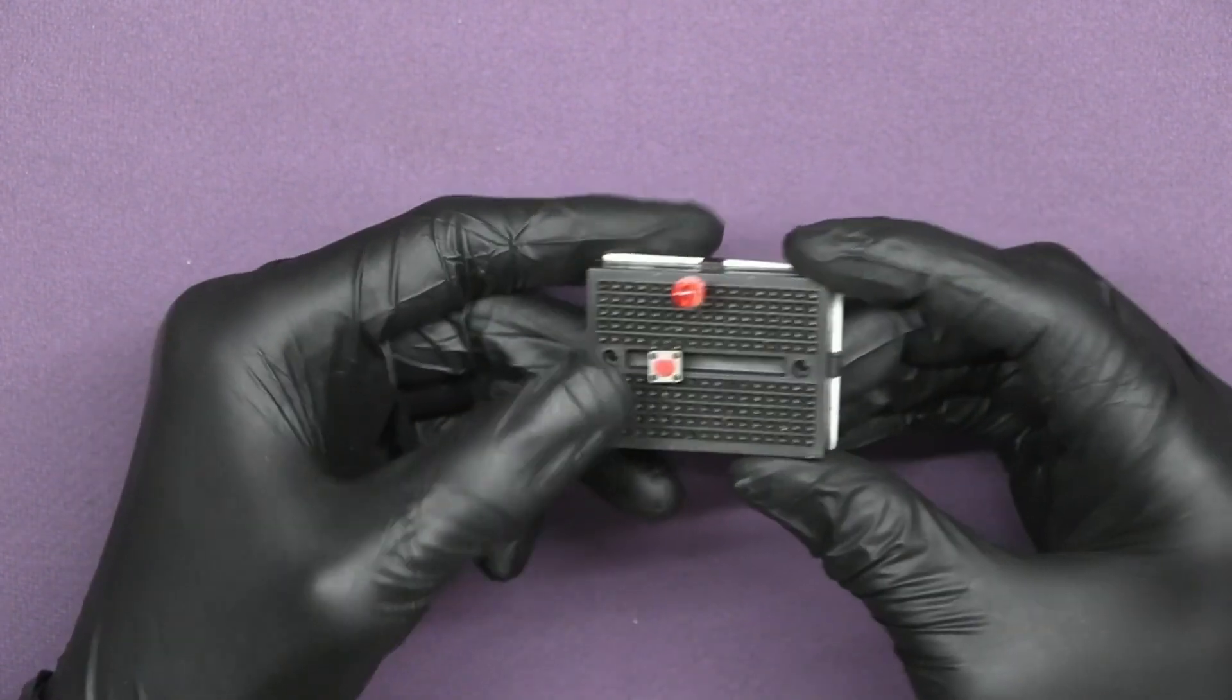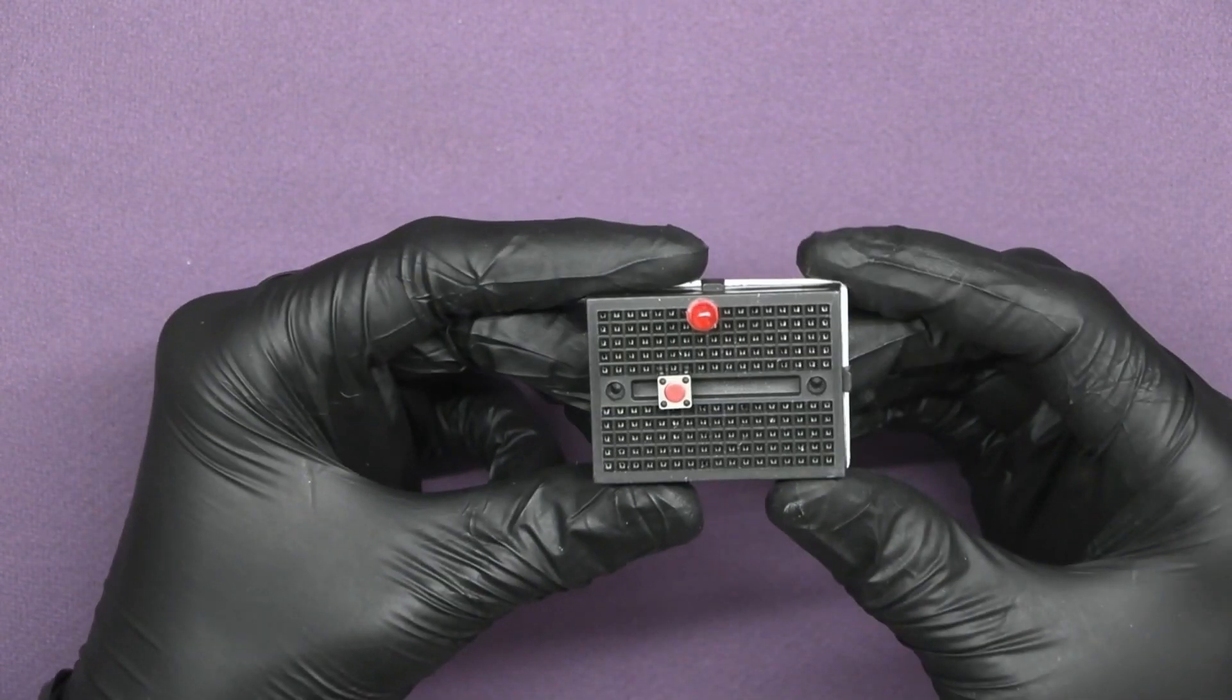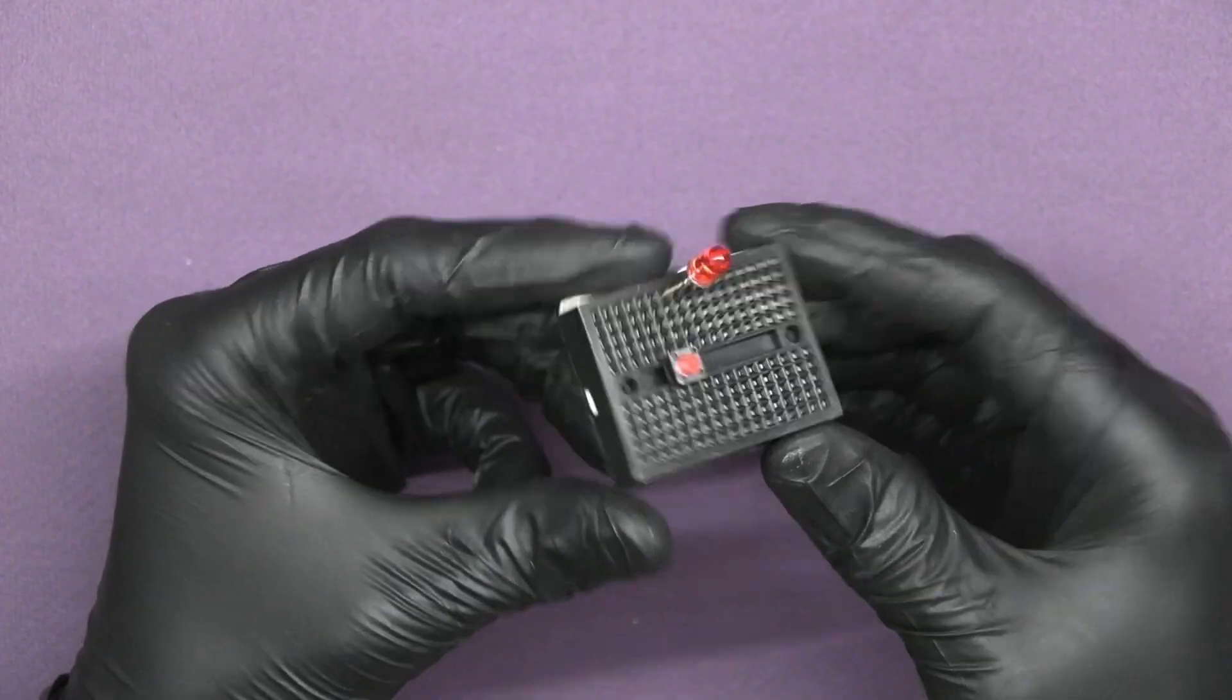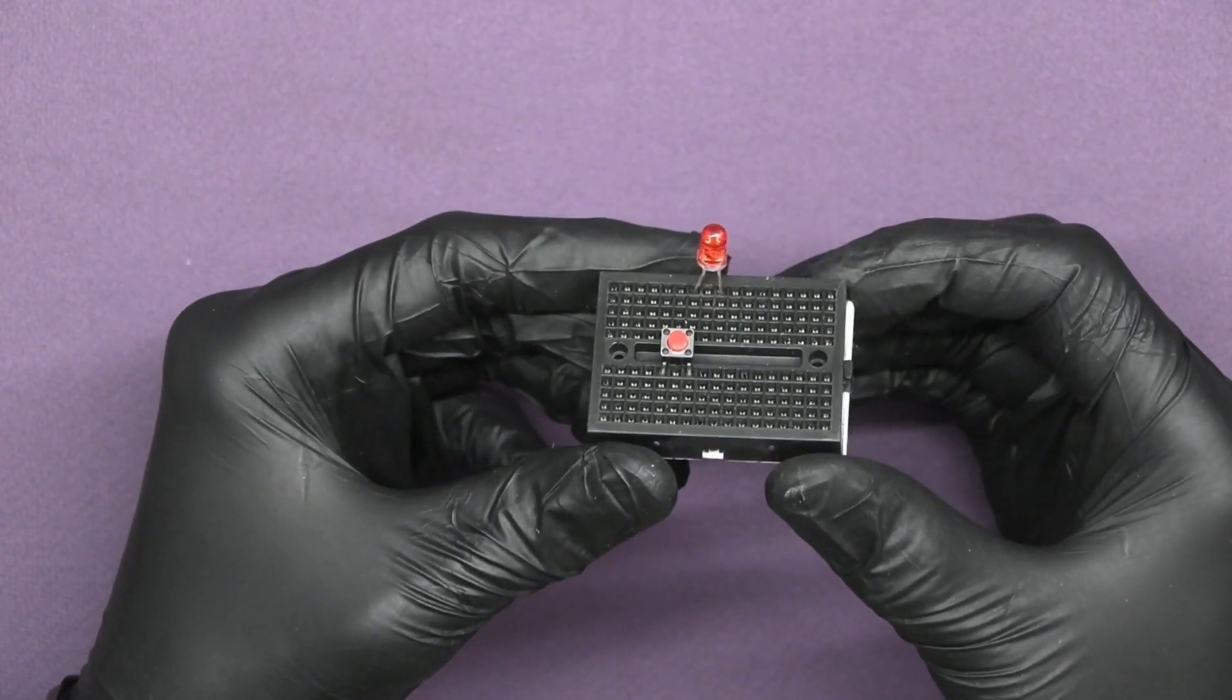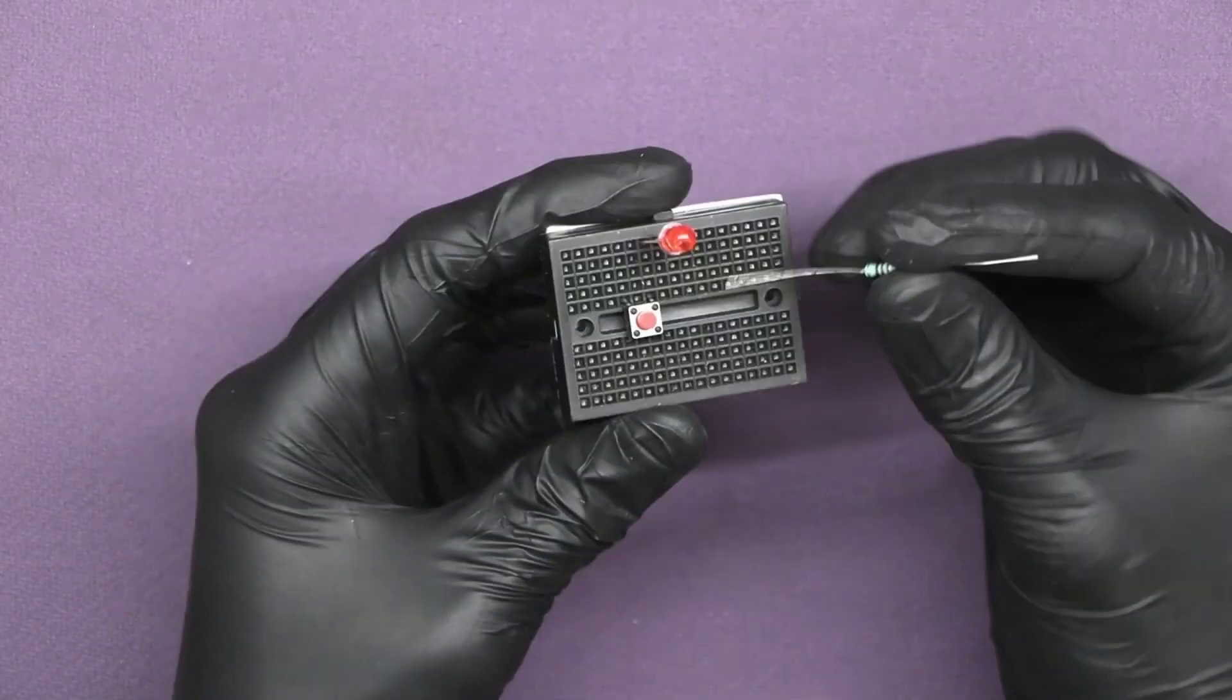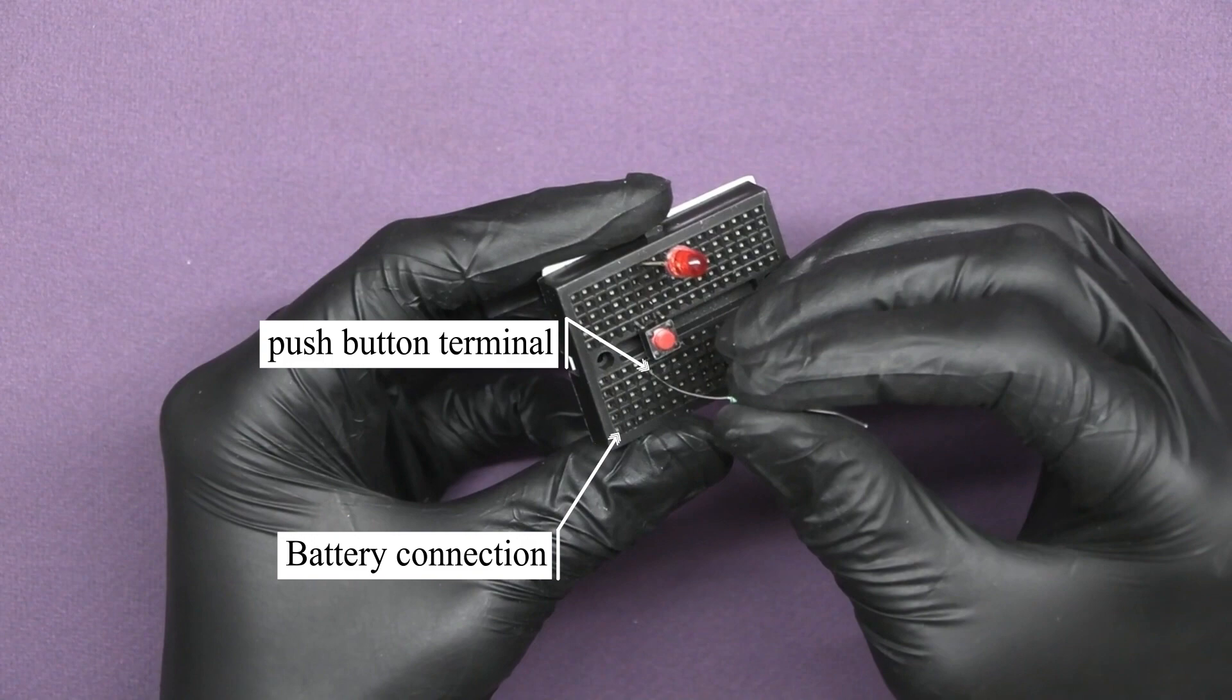Insert the switch in such a way that one side is connected to LED positive terminal. Insert the resistor into the breadboard by making a connection between battery and push button.